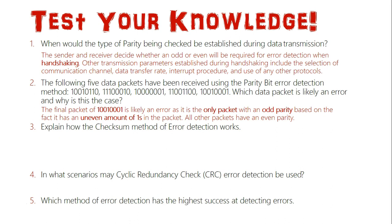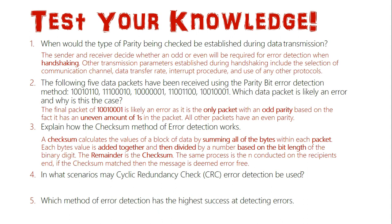Question 3: Explain how the checksum method of error detection works. It turns all the values into their decimal equivalents for all packets of data and adds them together, summing up all the bytes of data within the packet. Each byte's value is added together and then divided by a number based on the bit length of the binary digit. After this division, the remainder is the checksum. This checksum is then sent with the actual data, and the same process is conducted at the recipient's end. If the checksum matches, it is safe to say the transmission is error-free.